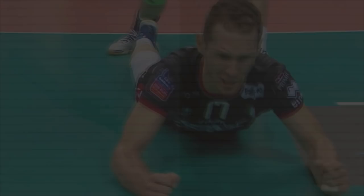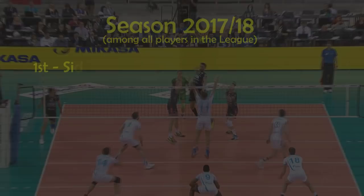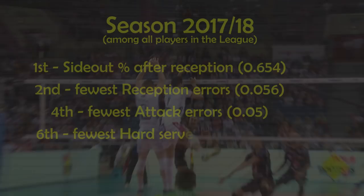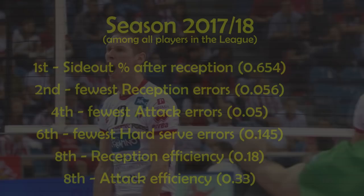Later, Urnaut proved in practice that he is a great all-around player. In season 2017-18, his stats were remarkable: among all players in the league, he was first in inside-out percentage after reception, second in least reception errors from all outside hitters, fourth in least attack errors from all outside hitters, and eighth in attack efficiency from all outside hitters and opposites — a player who does not deserve to be undervalued.